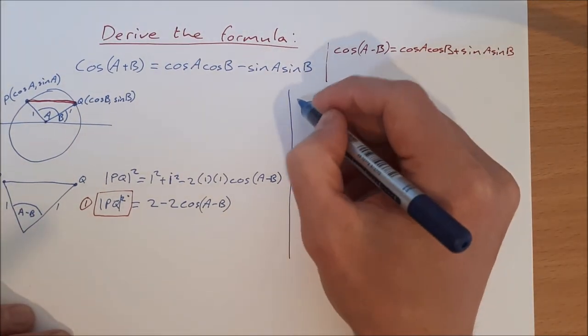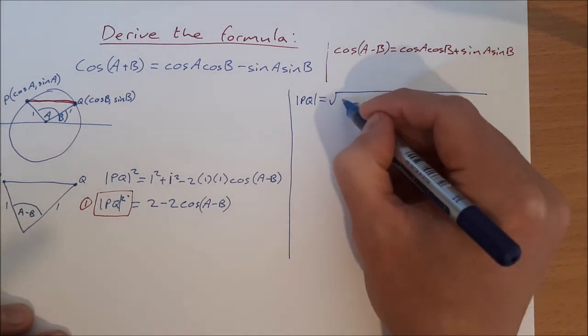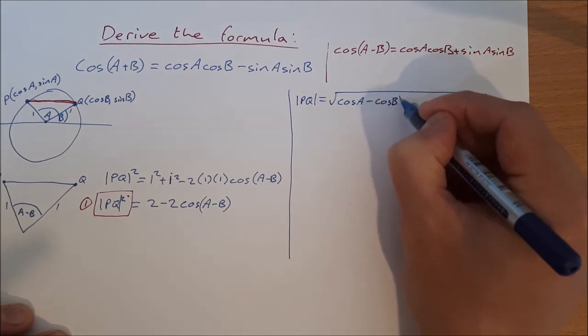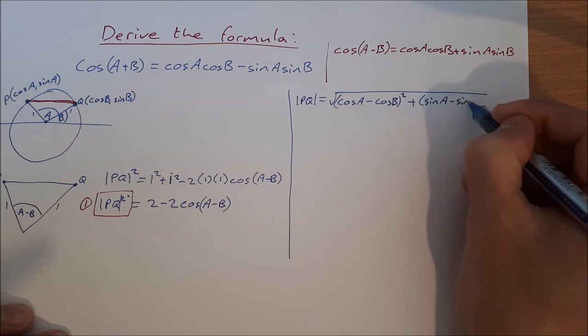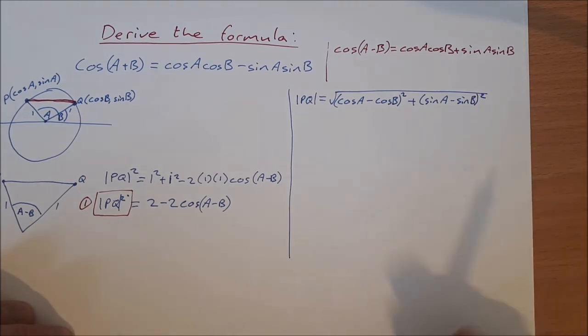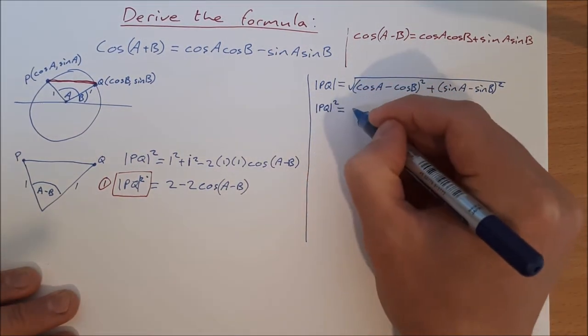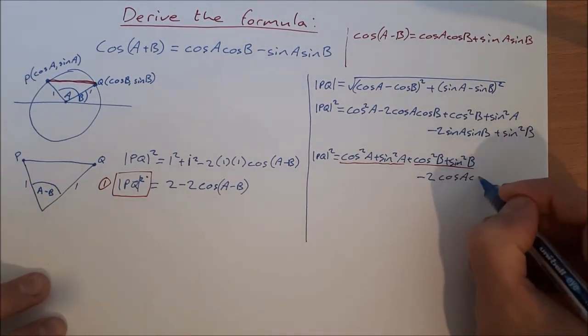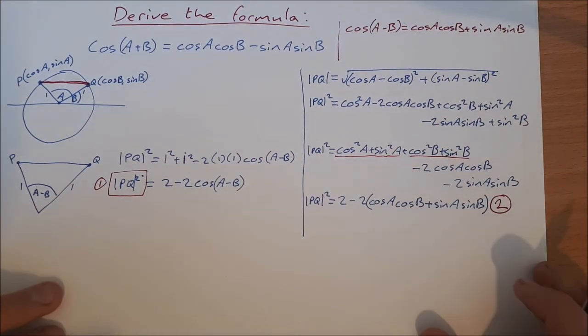So now we're going to find the distance from P to Q using the distance formula. So using the distance formula, what we have is the length PQ is equal to the square root of cos A minus cos B squared plus sin A minus sin B squared. I'm going to work quickly through this algebra here to get down to the bit that I need. And this is equation 2.